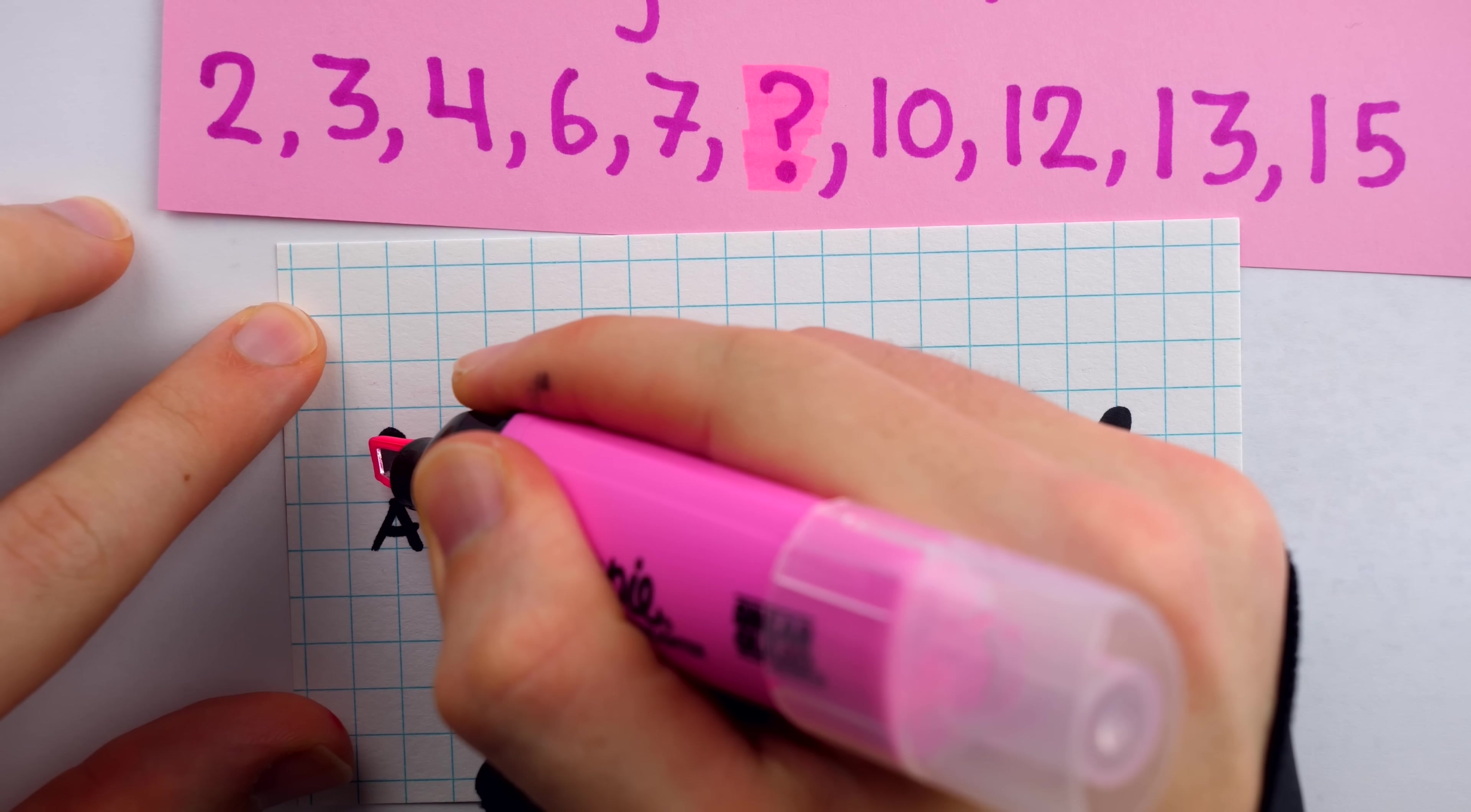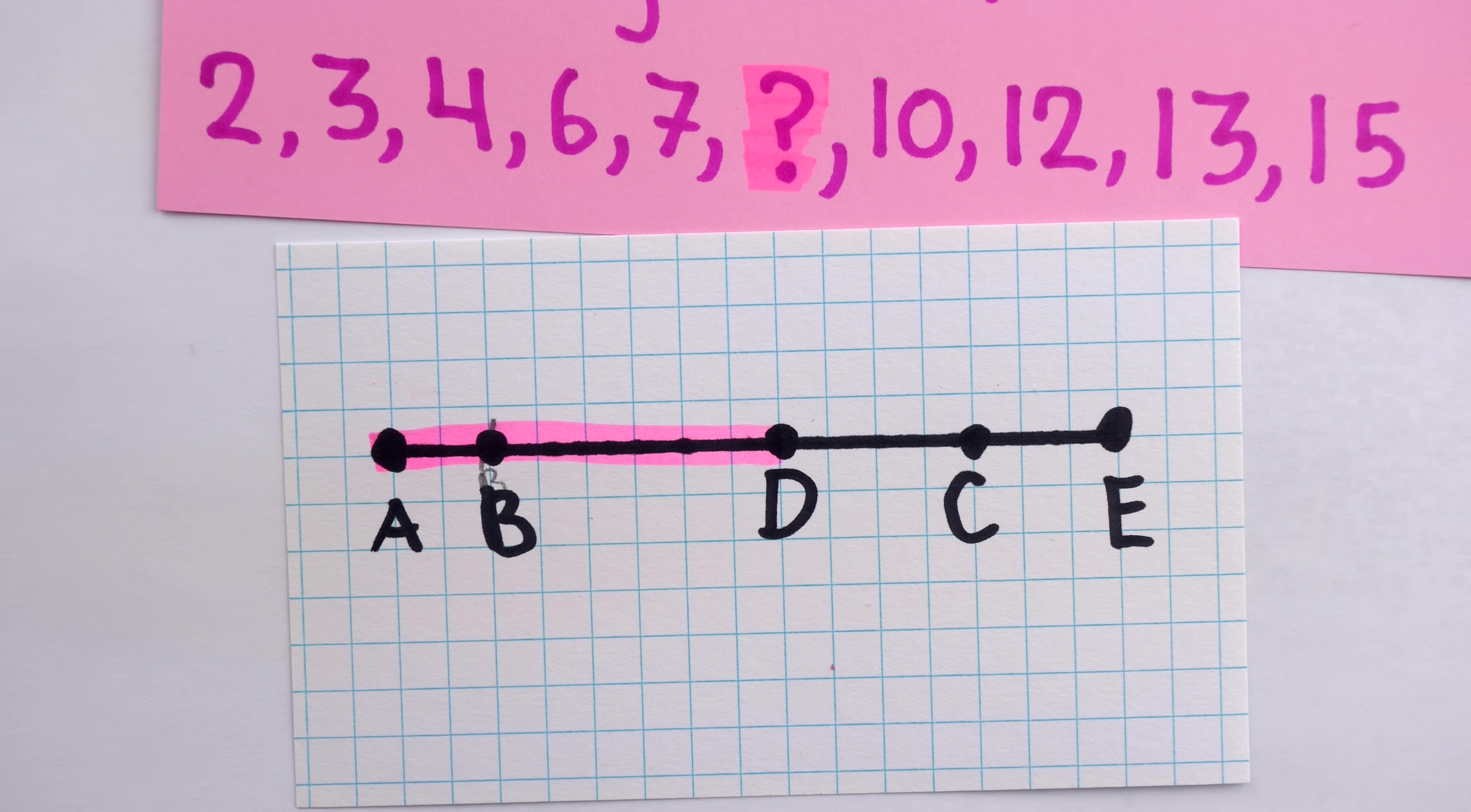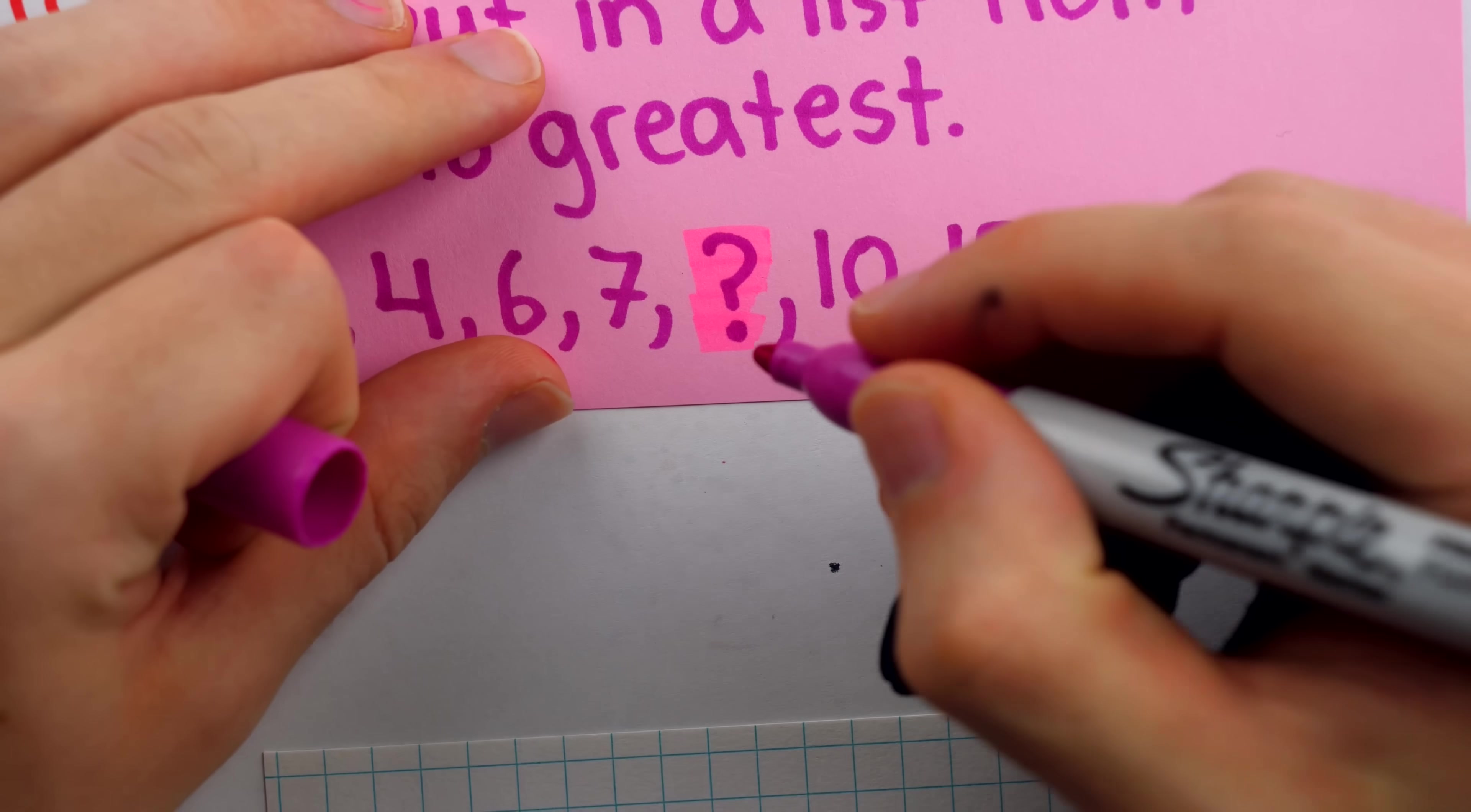And if you tabulate all the distances, you'll find that the one missing distance is the distance between A and D, which happens to be 8. So the missing term is 8.